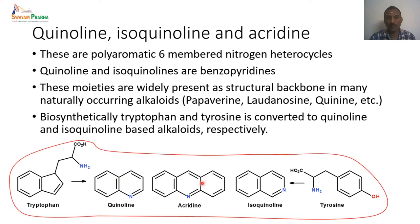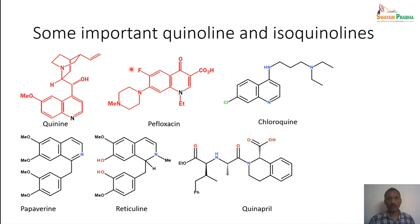Acridine is a six-membered heterocycle with nitrogen present in the central ring. Some important Quinoline examples include quinine, pefloxacin (which has a reduced Quinoline ring), and chloroquine. Papaverine has the Isoquinoline structure, and reticuline and quinapril both also have the Isoquinoline structure.